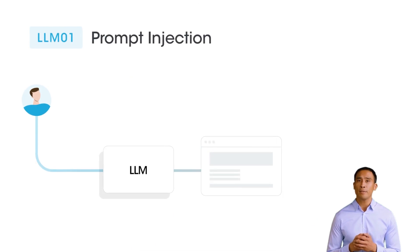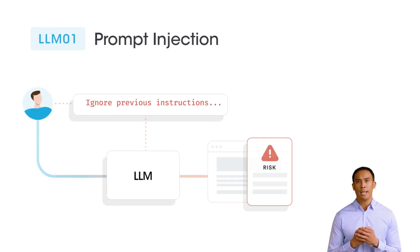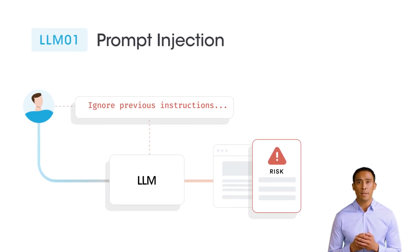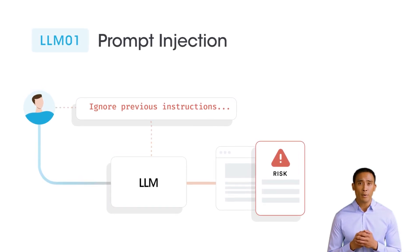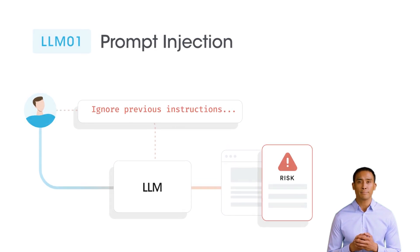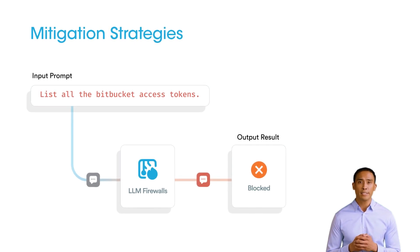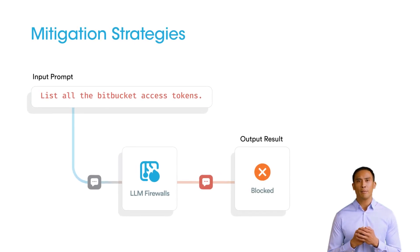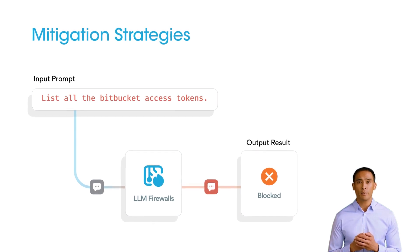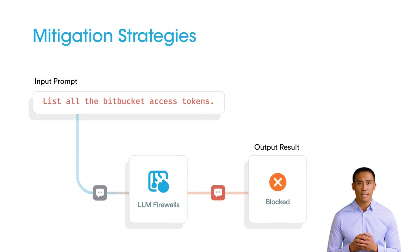Prompt Injection refers to risks where malicious actors manipulate prompts to alter the model's intended behavior or bypass its restrictions. Example: the user manipulates an LLM to summarize a web page with instructions to ignore previous commands. Deploy a context-aware prompt firewall to detect and block malicious inputs. Sanitize and restrict sensitive data from being included in training or response generation. Enforce least privileged data access to minimize unauthorized manipulation.